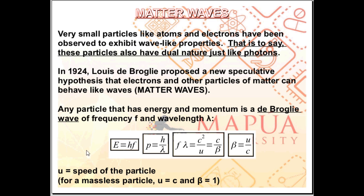So similarly, any particle that is behaving like a wave, a de Broglie wave, we can apply the same equations basically that we have for the photon. E is equal to H F, P is equal to H over lambda, F lambda is equal to C squared over U, C equal to C over beta, where beta is equal to U over C.